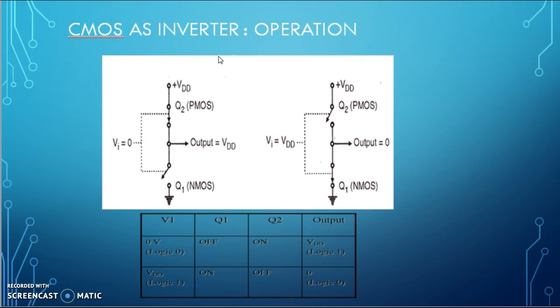We will see the operation of CMOS as inverter. When we provide input equal to 0, PMOS will switch ON and NMOS will switch OFF. As VDD is connected to the output terminal, output is equal to VDD. For input equal to 0, output is VDD means logic 1.